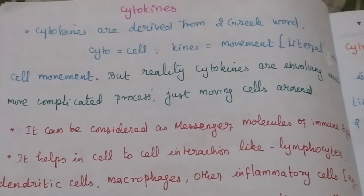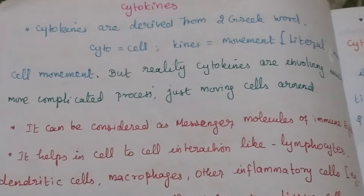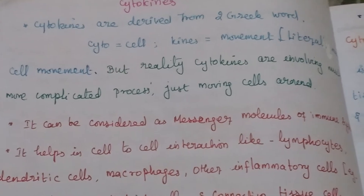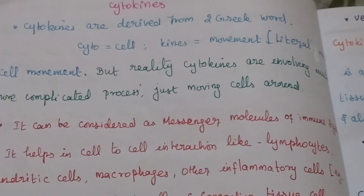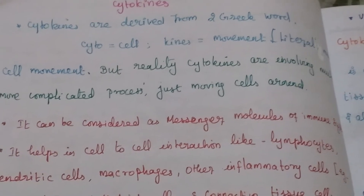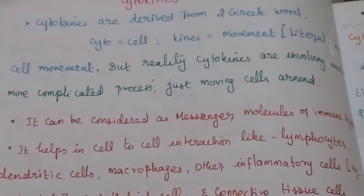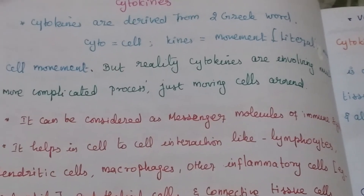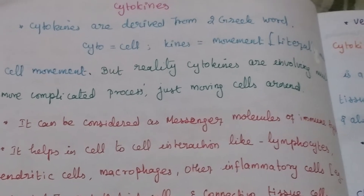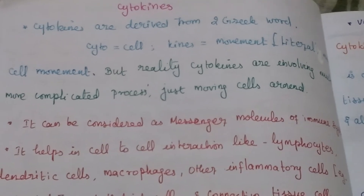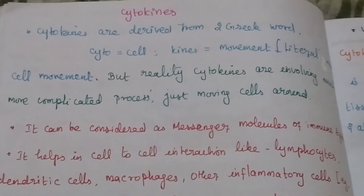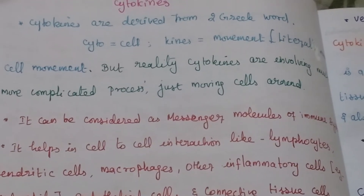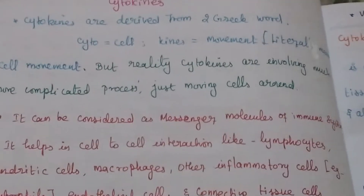In this video, we want to look at cytokines. Cytokines are derived from two Greek words: cyto means cell, kine means movement. So the literal meaning is cell movement. But in reality, cytokines are involving a much more complicated process.